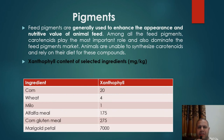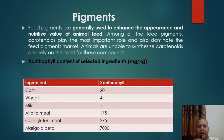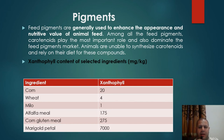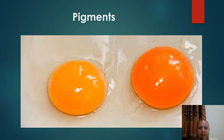Feed pigments are generally used to enhance the appearance and nutritive value of animal feed. Among all feed pigments, carotenoids play the most important role and dominate the feed pigments market. Animals are unable to synthesize carotenoids and rely on their diet for these compounds. Xanthophyll content of selected ingredients: corn has 20 mg/kg, wheat 4, milo 1, alfalfa meal 175 mg/kg, corn gluten meal 275 mg/kg, and marigold petal the highest at 7,000 mg/kg. There is a visible difference between pigmented feed and feed that doesn't contain pigments.